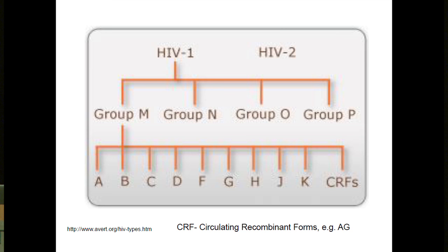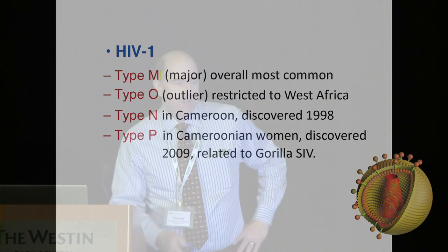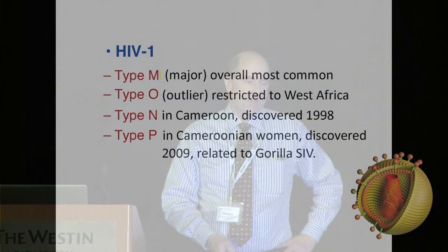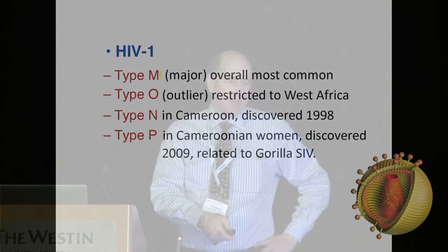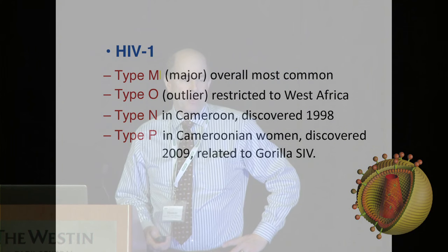These subgroups of group M are called clades. In the US and North America, the main HIV is clade B, so most lab tests are designed to detect antibodies to HIV1, HIV2, and group O, but they're really designed in the US to target clade B virus. Types N and P are extremely rare.